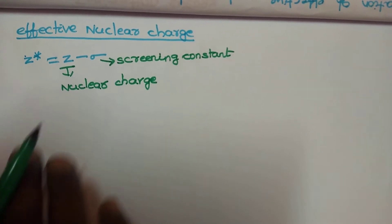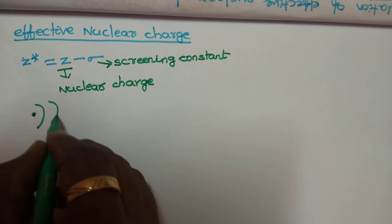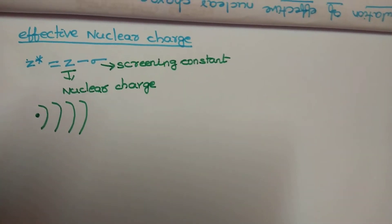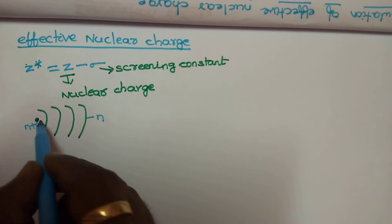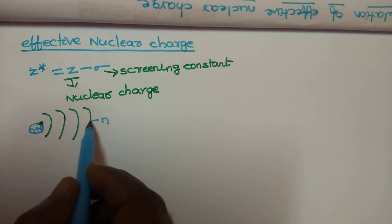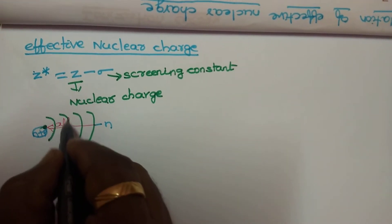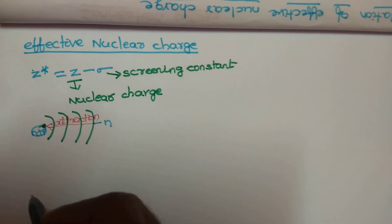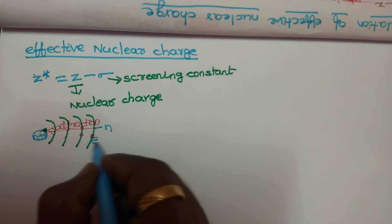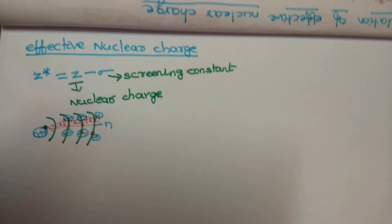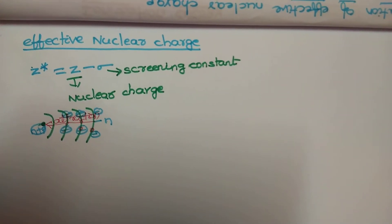Effective nuclear charge originates from the shielding effect. Generally, what is meant by the shielding effect: the nucleus has different shells present. This is the outermost shell, generally called the nth shell, and this is the nucleus. The nucleus attracts the electron present in the valence shell towards itself — this attraction is called the nuclear charge or force of attraction.